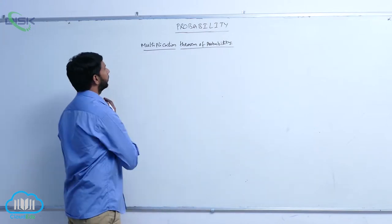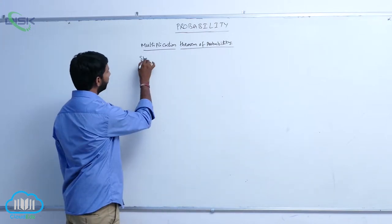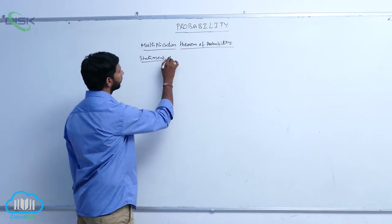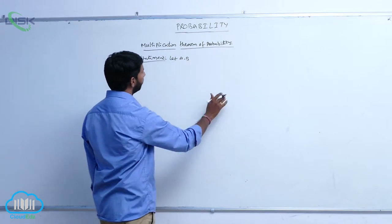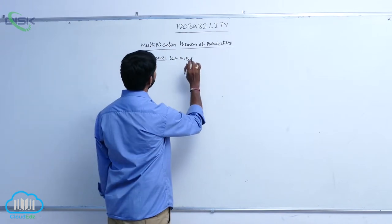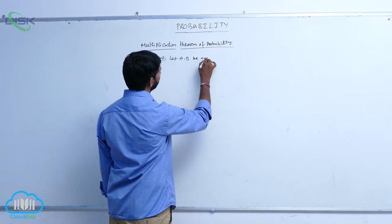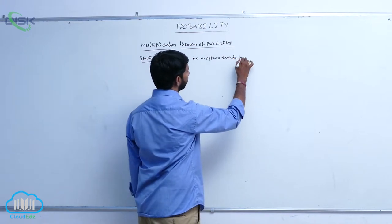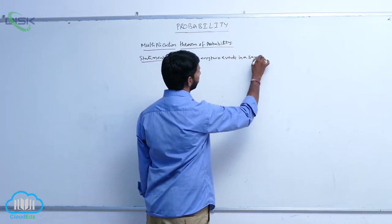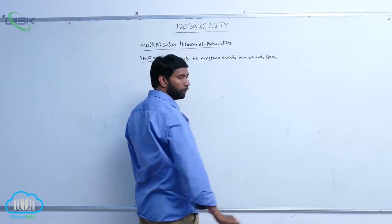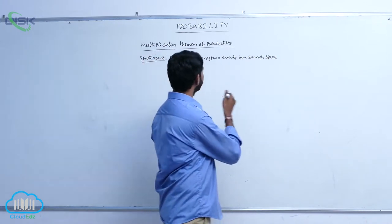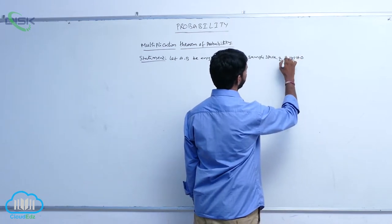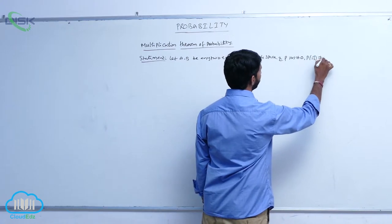Multiplication Theorem of Probability. Statement: Let A, B be any 2 events in a sample space, and P of A not equal to 0, P of B not equal to 0.